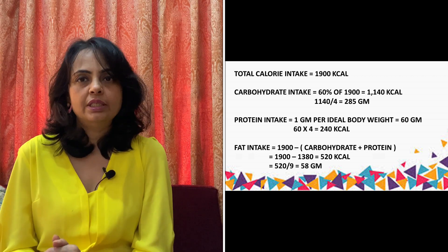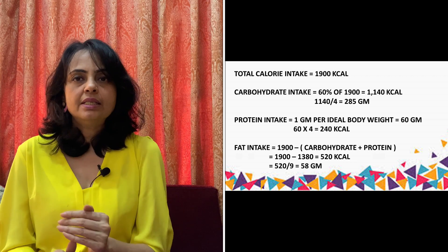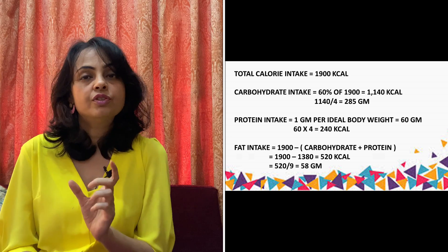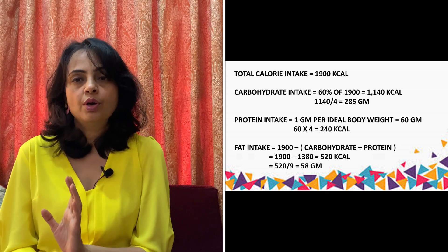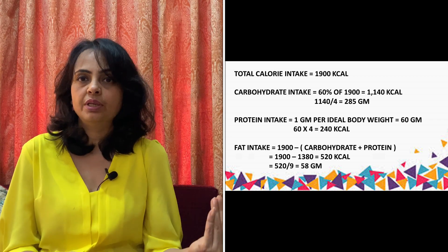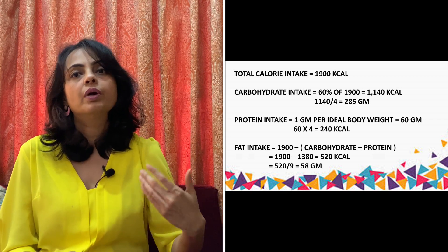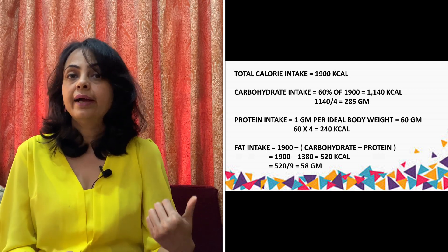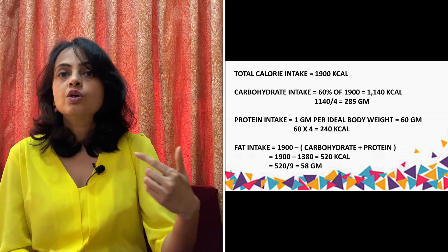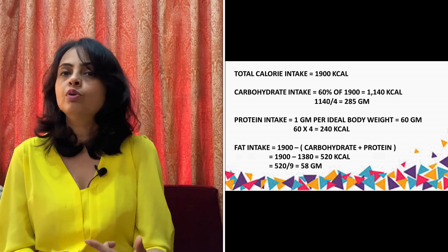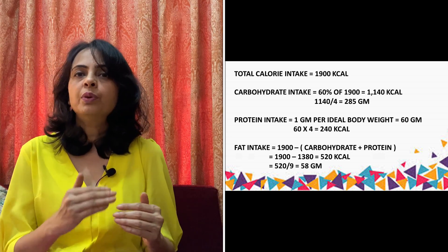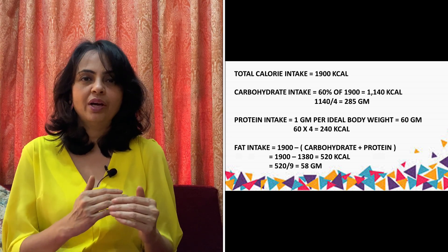Now for proteins: an average Indian needs 1 gram of protein per kilogram of ideal body weight. So if my weight is 60 kg, I need 60 grams of protein. Now I convert that into calories — since 1 gram of protein gives 4 kilocalories, 60 grams of protein gives 240 kilocalories. Very simple and very clear.